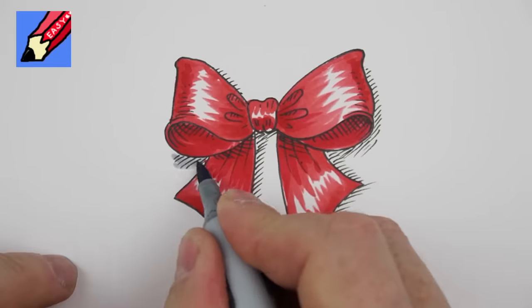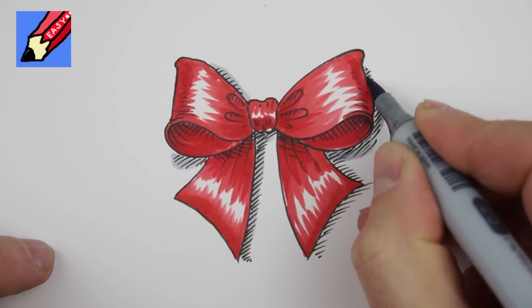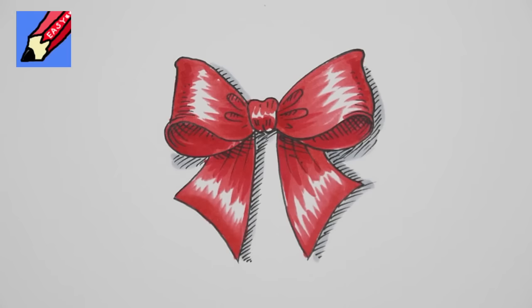And you can always put in that bit of shading with a grey pen as well. There you go, how to draw a Christmas bow, or a birthday present bow, or something for putting in your hair.